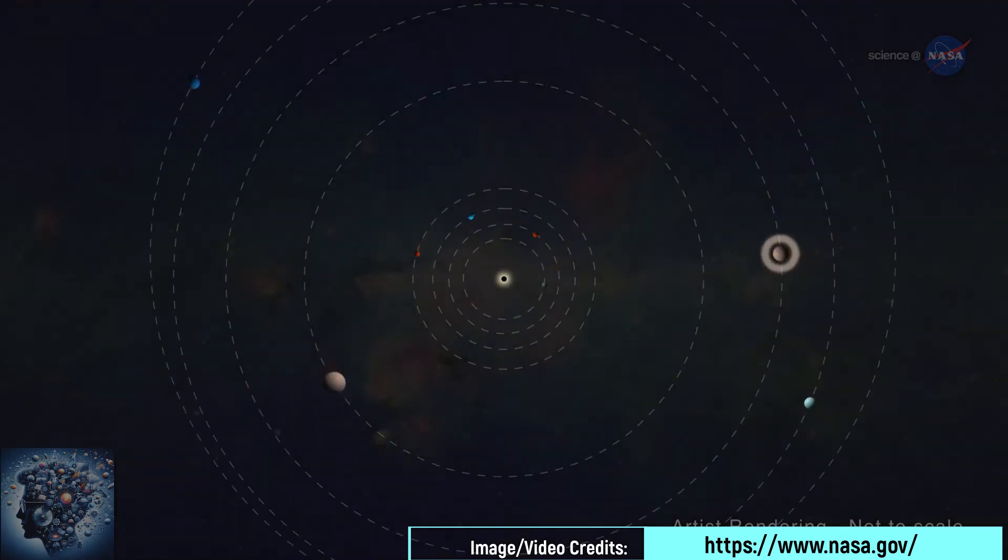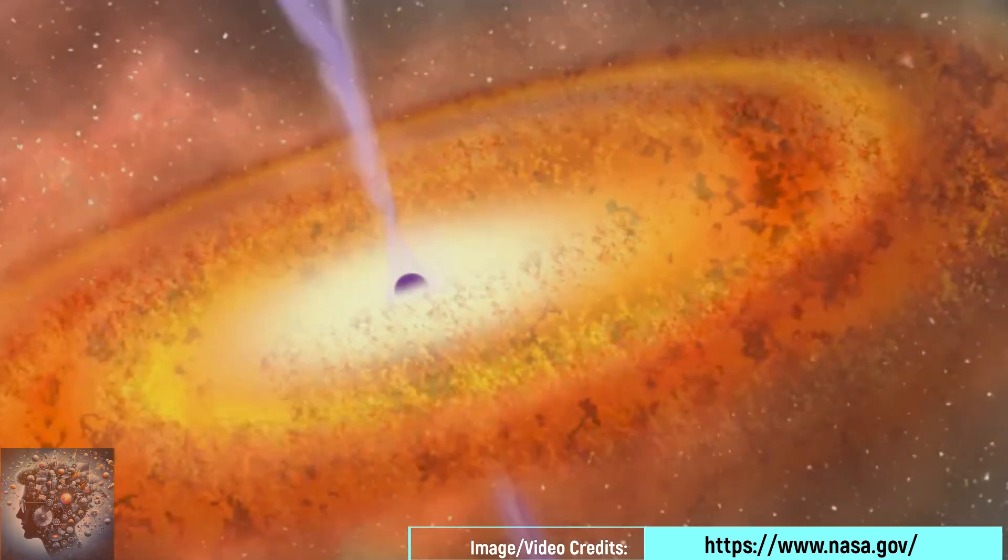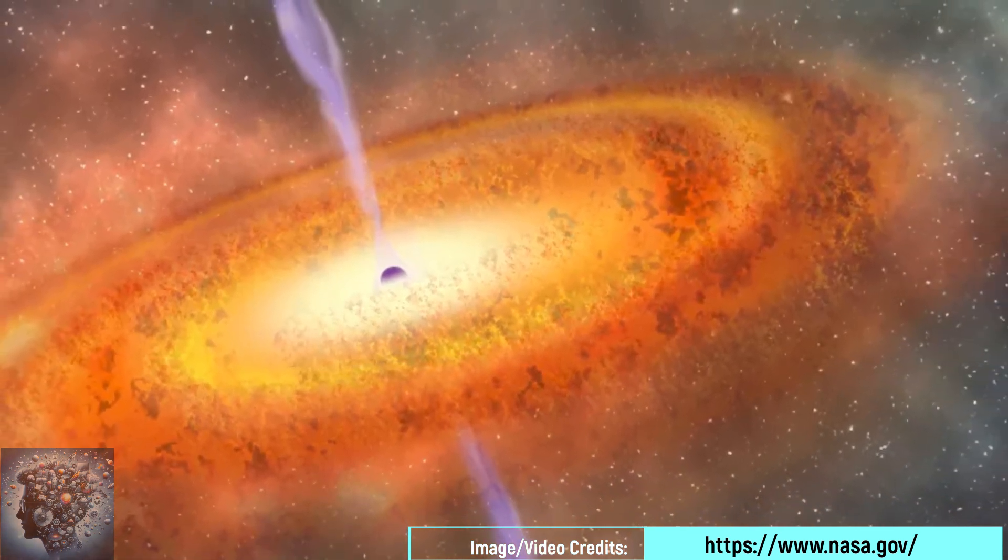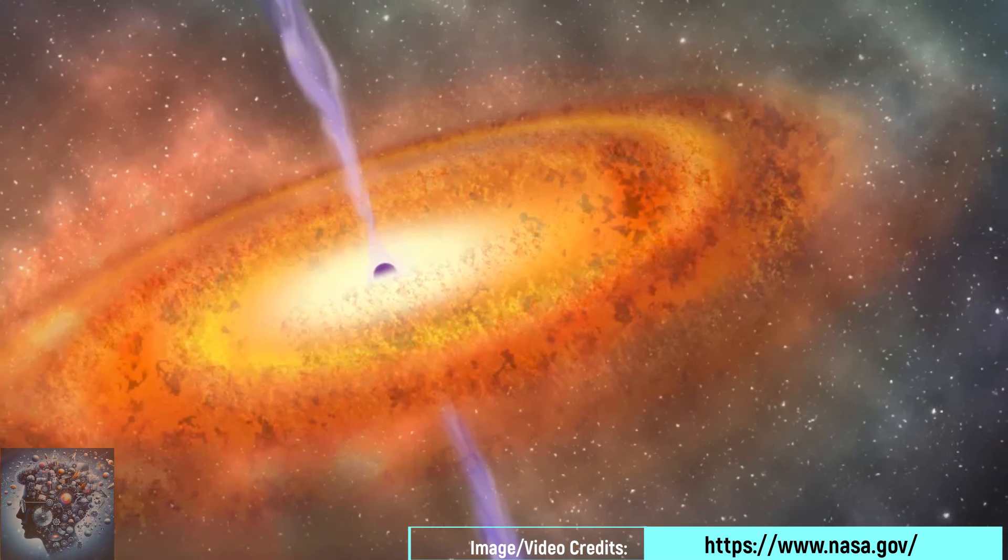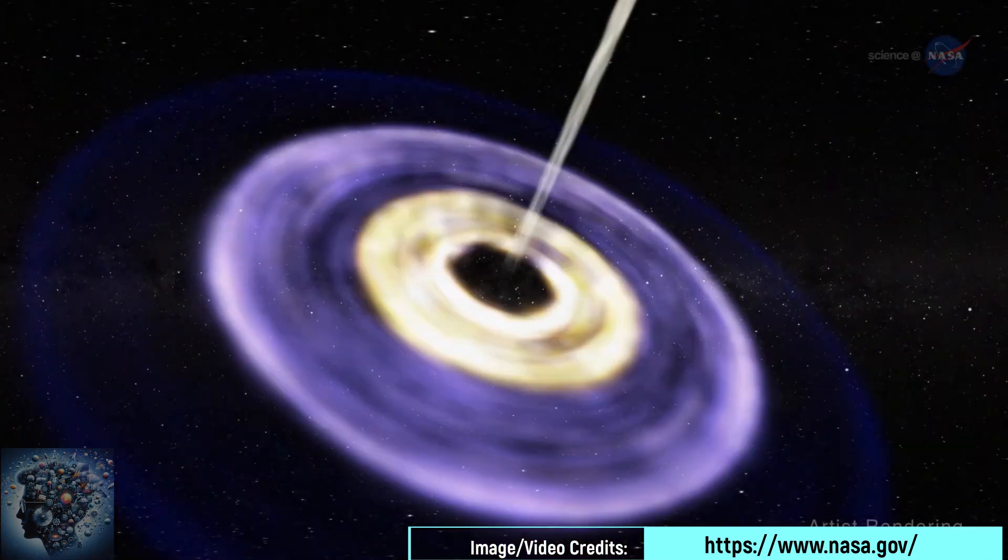Next are the intermediate black holes, whose mass varies from 100 to 10,000 solar masses. These are quite enigmatic objects, and their existence has not been as well confirmed as that of stellar or supermassive black holes. Their formation can occur from the merger of stellar black holes, the gravitational collapse of dense star clusters, or other forms of matter accumulation. Several studies on intermediate black holes are underway, and their understanding should contribute significantly to the study of the formation and evolution of black holes in general.